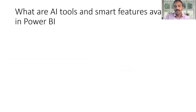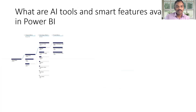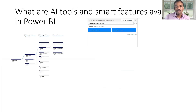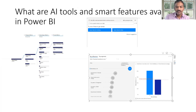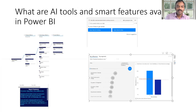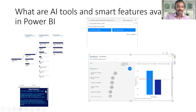What are AI tools and smart features available in Power BI? Decomposition tree, question and answers, key influencers, and smart narrative report summary are the main AI features. Smart narrative provides a report summary and allows customization.